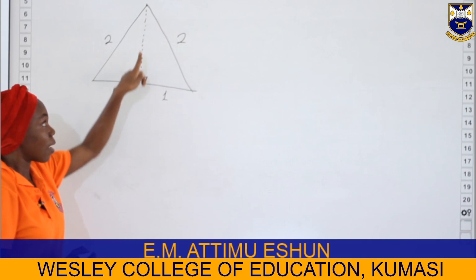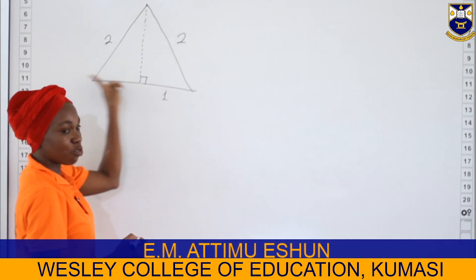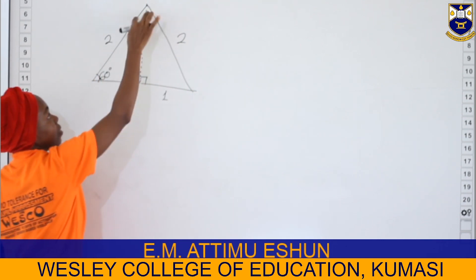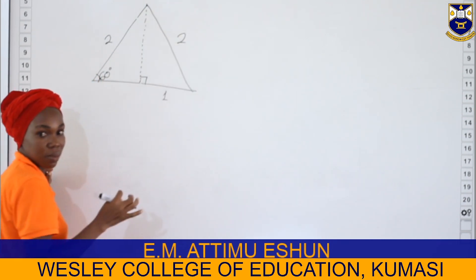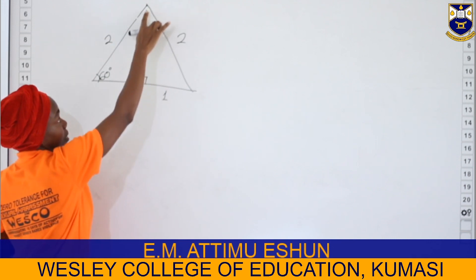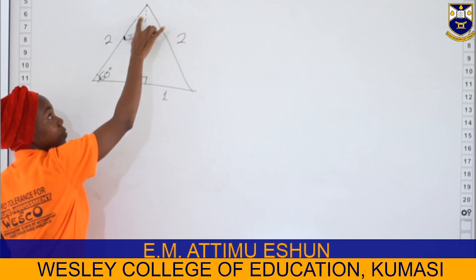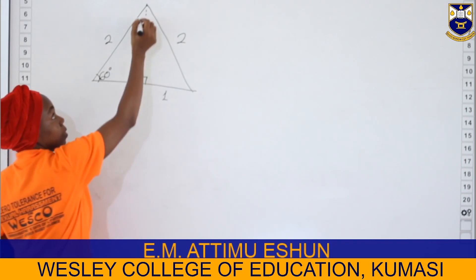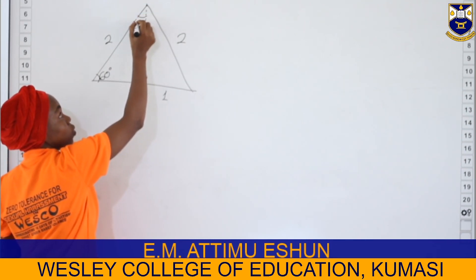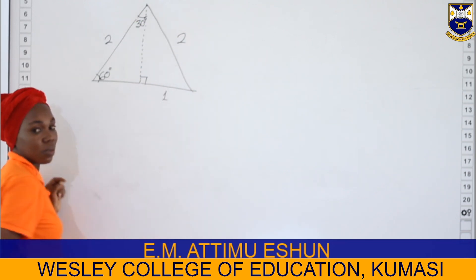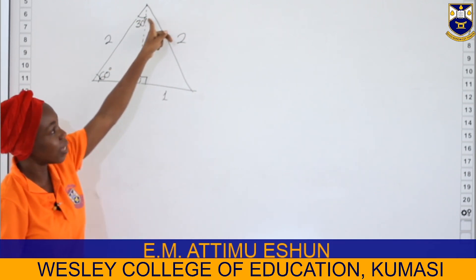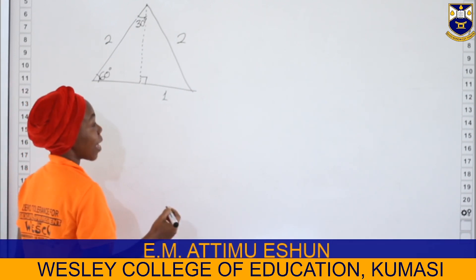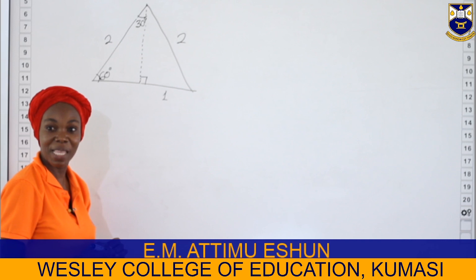This angle here is 90 degrees. For the equilateral triangle, all angles are 60 degrees. The altitude divides the top angle into two equal parts, so 60 degrees becomes 30 degrees on one side and 30 degrees on the other side.